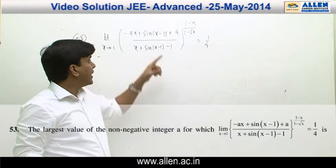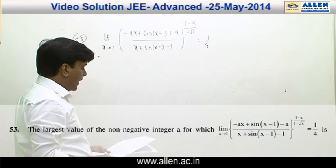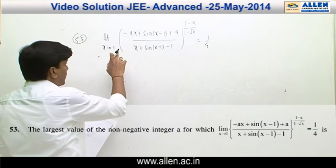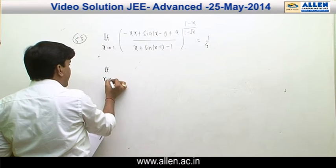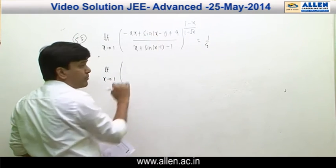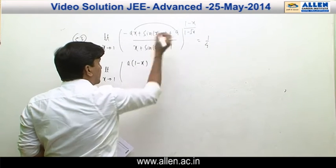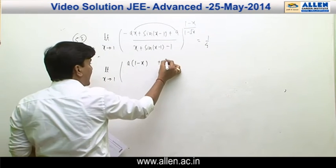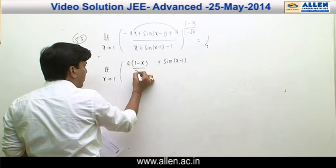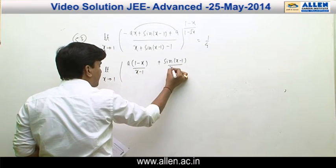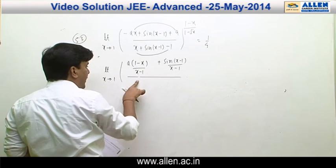In question number 53, the value of the limit is given as 1/4 and 'a' is a non-negative integer. Calculating this limit as x approaches 1, we divide the fraction by (x - 1), clubbing two terms to get a(1 - x) plus sin(x - 1), then dividing numerator and denominator by (x - 1).